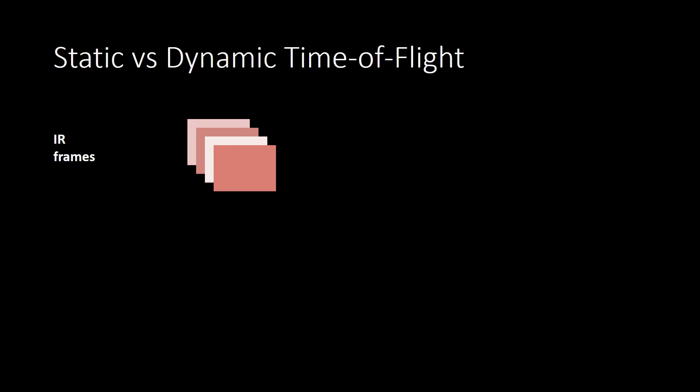We now describe the operation of a normal time of flight camera. The camera captures a set of infrared frames using an active illumination measurement pattern. A DEVS algorithm uses the infrared frames to produce a DEVS frame, and this capture and computation happens for each output DEVS frame.